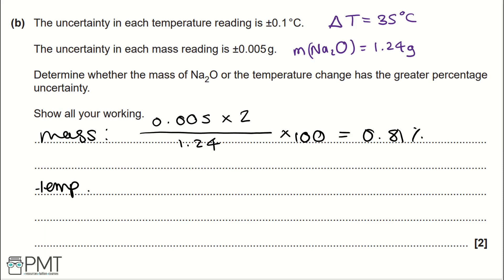Then, for temperature, we use a similar approach. 0.1, this time, is our uncertainty for each reading. We then multiply by 2 because we've used two temperature readings to work out temperature change. I've rewritten temperature change, it's 35 degrees Celsius. We then multiply by 100. That gives us a percentage uncertainty of 0.57%. So, mass has a greater percentage uncertainty.